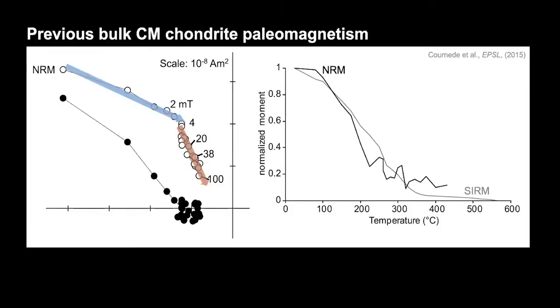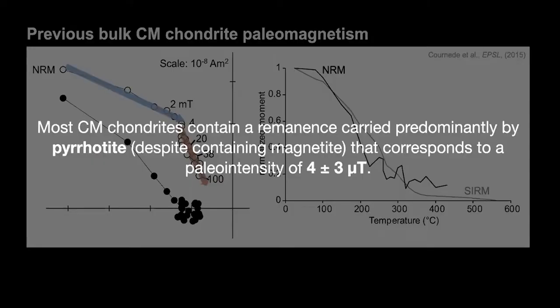Now just before I show the data from Winchcombe, I want to quickly show what most CM chondrites look like in their demagnetization patterns. So I'm showing an orthogonal projection plot from a paper from a few years ago now, and we can see that by 100 millitesla there is a broadly origin trending component, but it's by no means at the origin, it's not completely demagnetized. And we see that most of the NRM, when you heat it, is lost by about 300 degrees C. These two results combined suggest that it's a remanence predominantly carried by the pyrrhotite, which is kind of interesting because there's certainly magnetite in this meteorite. We see it under the microscope, we see it in XRD, and we also see it in the magnetism as well. There is a signal that demagnetizes above the pyrrhotite Curie temperature all the way up to the magnetite Curie temperature. So it seems like only the pyrrhotite is magnetized in this meteorite. And this corresponds to a paleointensity of four plus or minus three microtesla, so significantly weaker than Earth's field today.